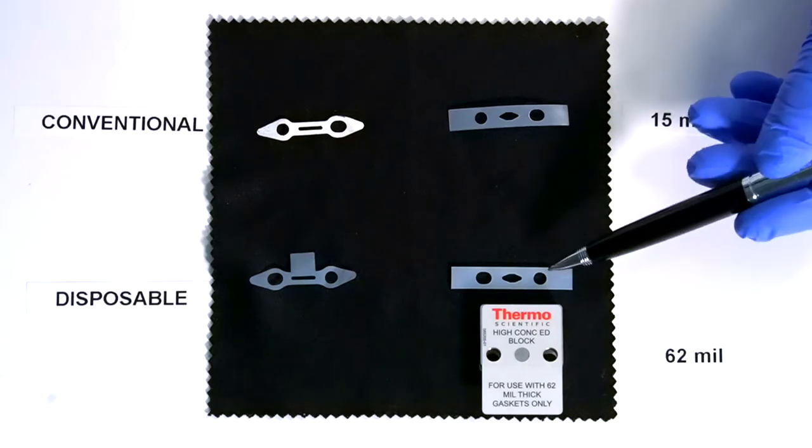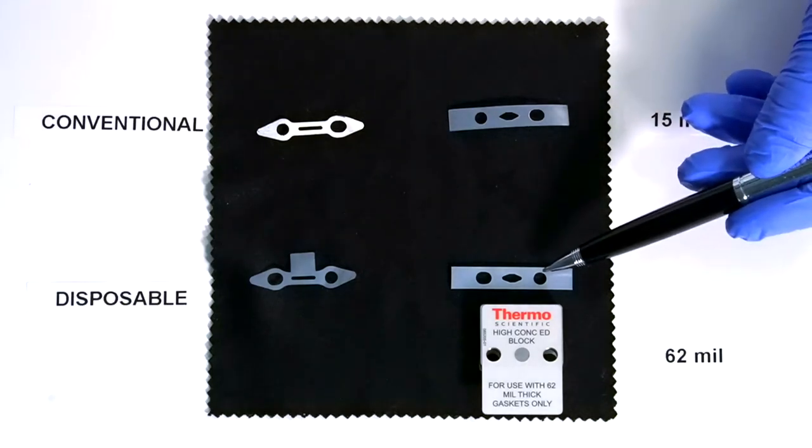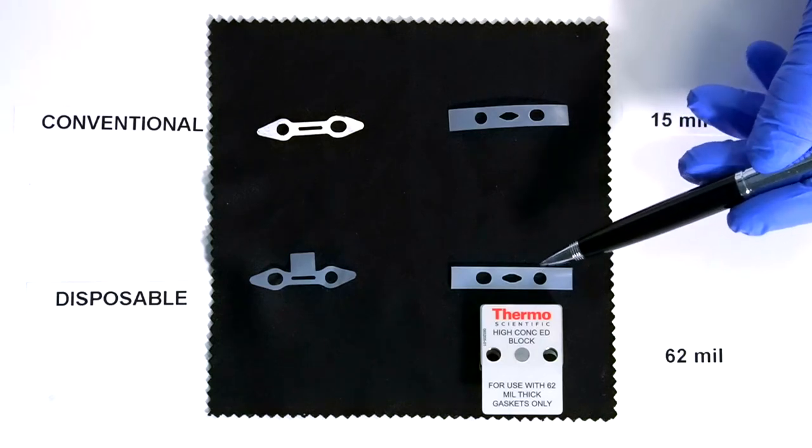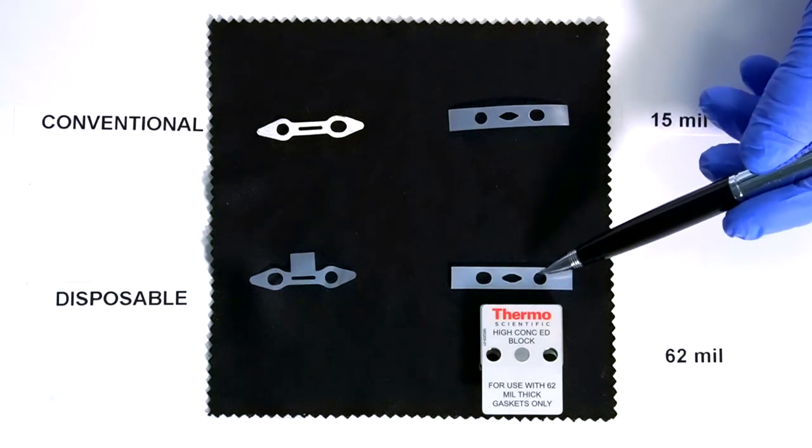Because we're varying the thickness, that volume of the cell is changed and we can use that to increase the linear working range of the detector.